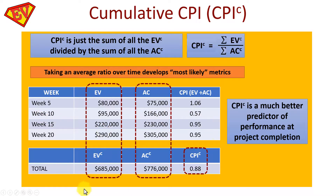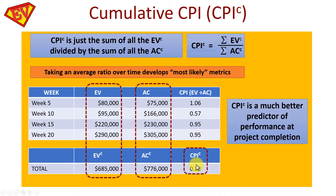Adding up all the Earned Values gives 685,000, and all the Actual Costs gives 776,000. Cumulative CPI = 685,000 ÷ 776,000 = 0.88. You could also average the individual period CPIs — dividing by four here gives the same result. Taking an average over time gives more reliable metrics than using a short period where CPI might be unusually high or low and could change within the next month.